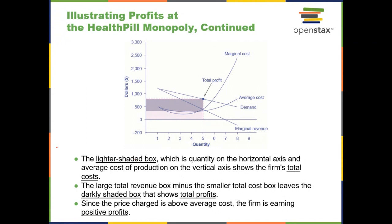Think about Facebook or Google — they are monopolies for all intents and purposes, but the price is still zero. Amazon tends to charge fairly low prices; they're in many ways a monopoly, not in all ways, but in many ways. So we do see some firms capturing extra-normal profits, but it's not quite as widespread as one might think.